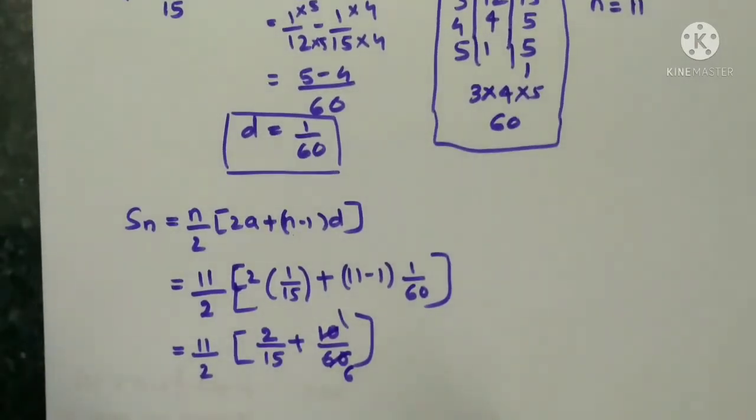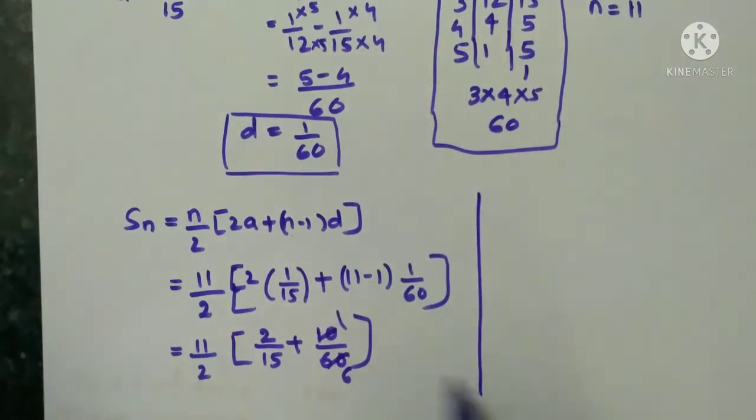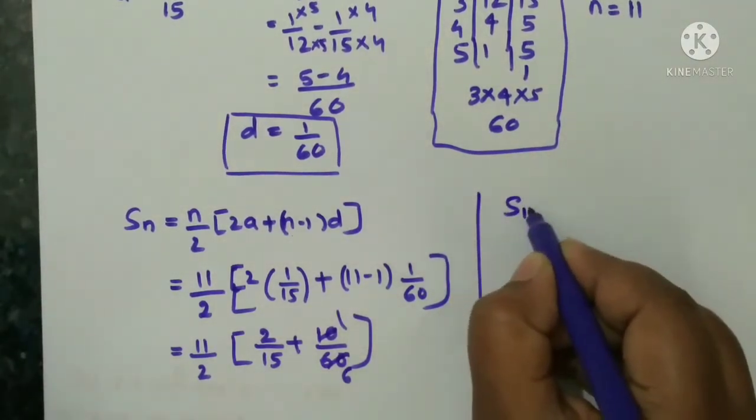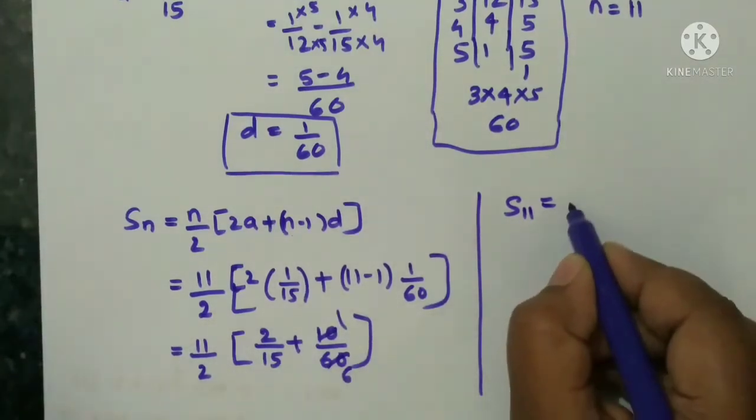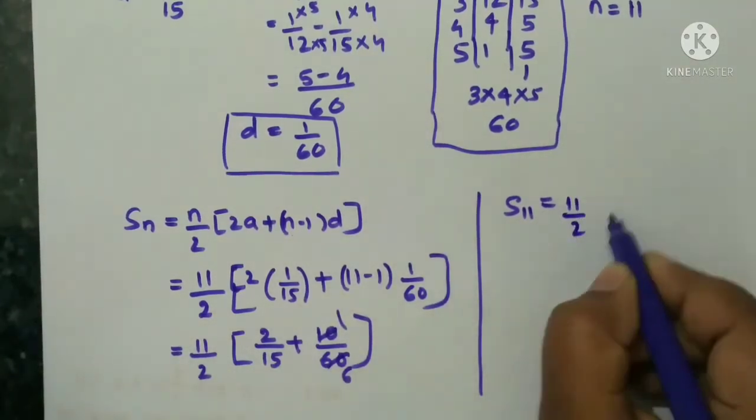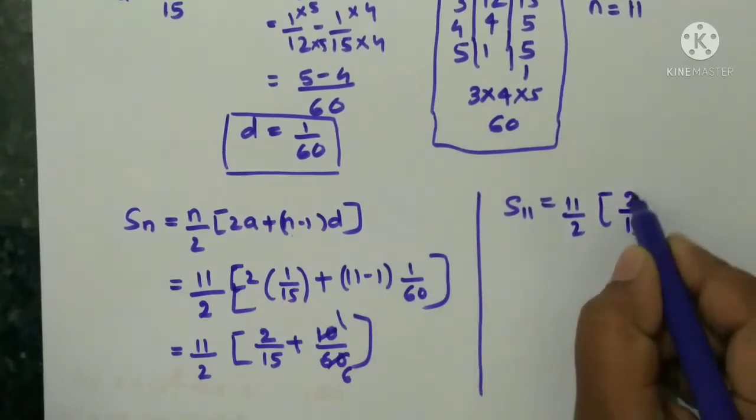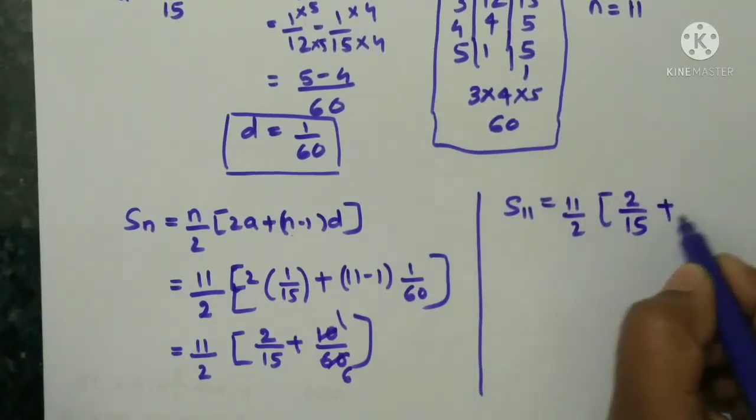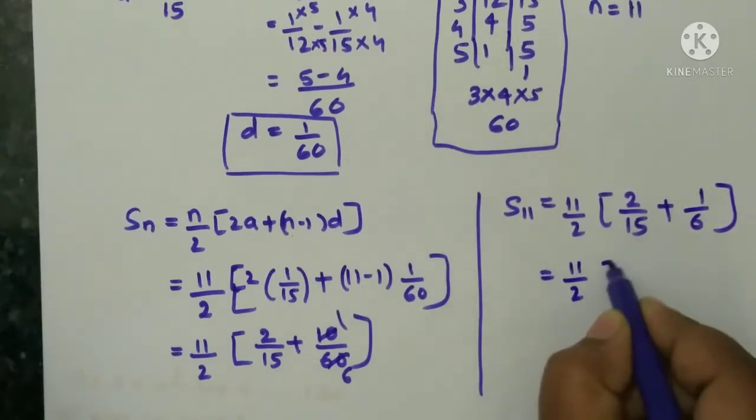So here, now 10 ones are 10, 6 I will solve it here next after this step. So S11 is equal to, after this step I am solving here. 11 by 2 into 2 by 15, we can cancel these 2, so I didn't cancel, 1 by 6. Now you see, 11 by 2 as it is I am writing.